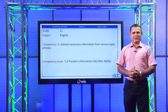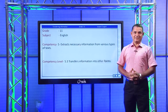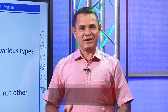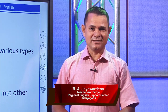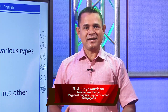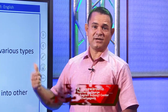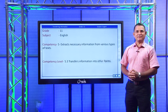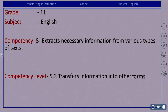Hello children, welcome to English lesson grade 11. Today we are going to speak about something very important for all level students — that is reading. I am going to touch on one competency and competency level. Competency 5: extracts necessary information from various types of texts. And competency level 5.3: transfers information into other forms.